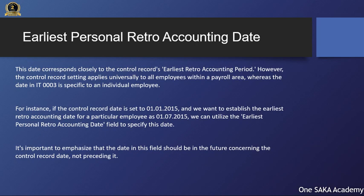This date corresponds closely to the control record's earliest retro accounting period. However, the control record setting applies universally to all employees within a payroll area, whereas the date in IT0003 is specific to an individual employee. For instance, if the control record date is set to the 1st of January 2015, and we want to establish the earliest retro accounting date for a particular employee as the 1st of July 2015, we can utilize the earliest personal retro accounting date field to specify this date. It's important to emphasize that the date in this field should be in the future concerning the control record date, not preceding it.